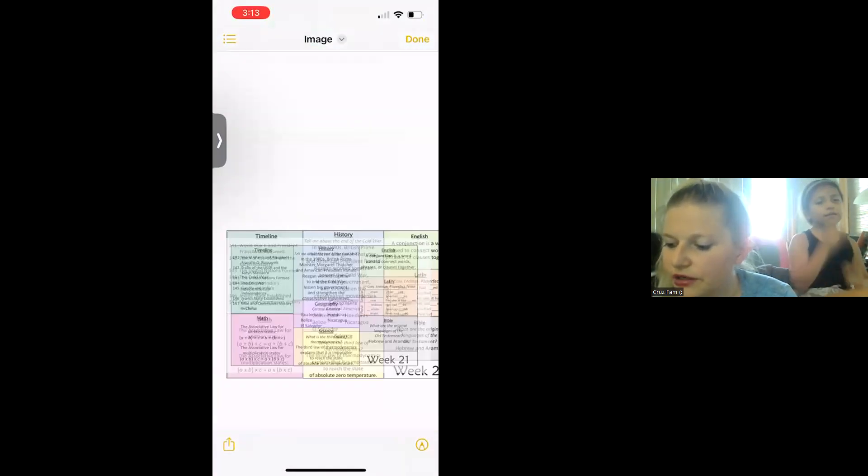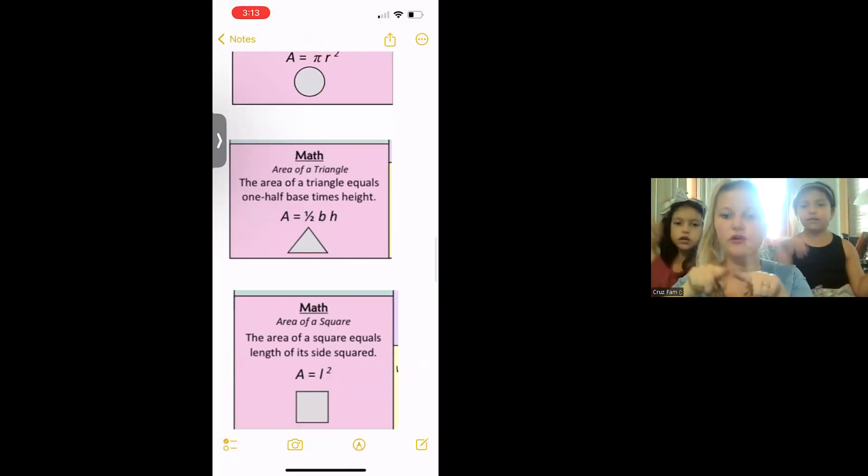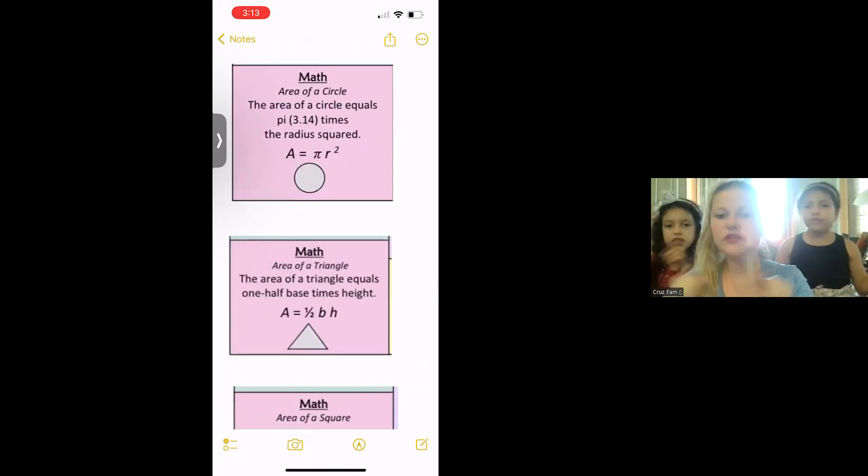Math. We're going to review area first. The area of a rectangle equals length times width. The area of a square equals length of a side squared, s squared. The area of a triangle equals one-half base times height. The area of a circle equals pi times the radius squared. The circumference of a circle equals two times pi times the radius.